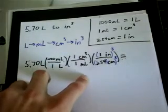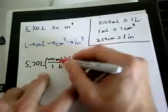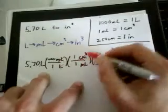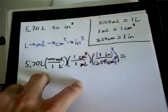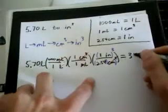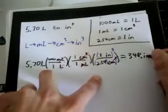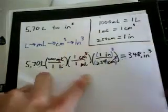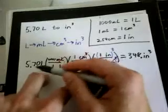And if we put that into a calculator with the correct number of significant figures, before I go further, make sure your units cancel. Liters cancel, milliliters cancel, cubic centimeters cancel, and we're left with nothing but cubic inches. So our final answer is 348 dot cubic inches, because this value has the fewest number of significant figures with three.